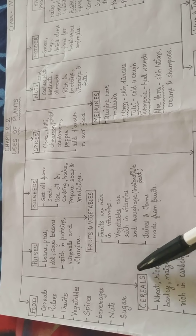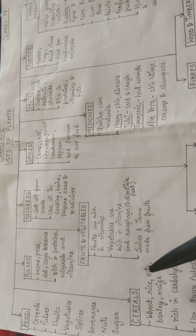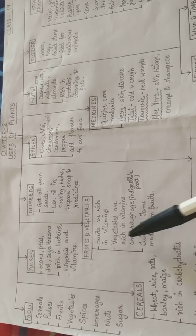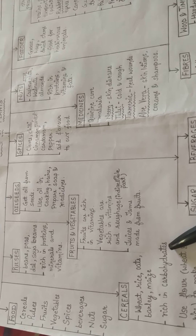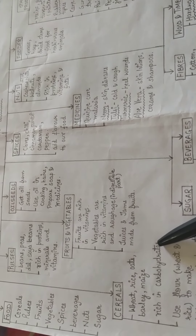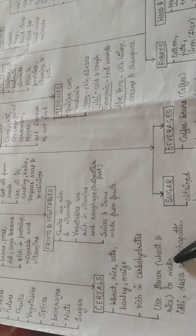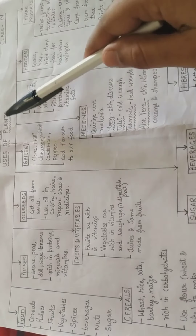Let's begin with cereals. Food grains such as wheat, rice, oats, barley, and maize are called cereals. Food grains are rich in carbohydrates. We use flour obtained from rice and wheat to make idli, dosa, and chapatis. In this way, cereals are helpful for us and we get cereals from plants.